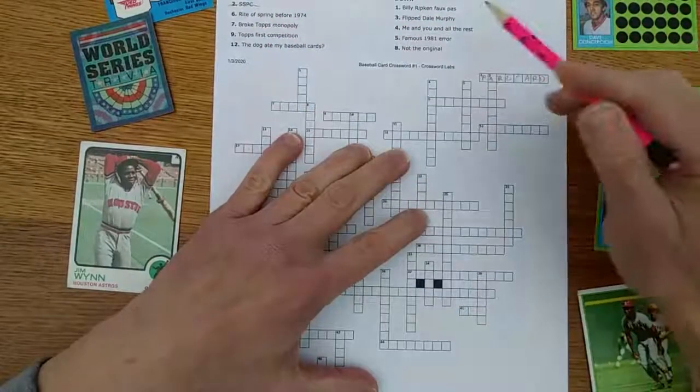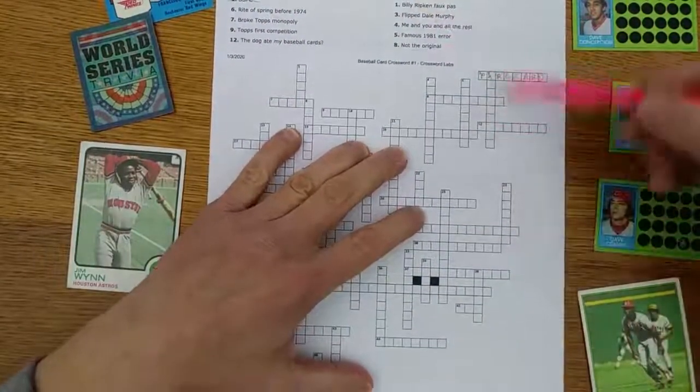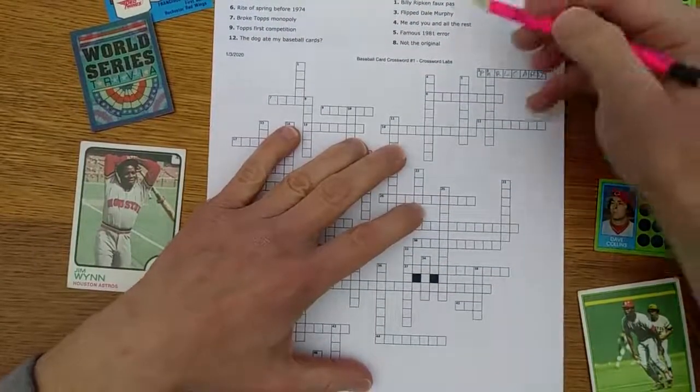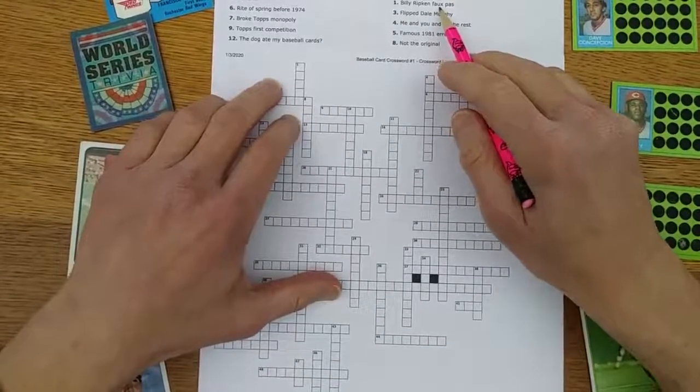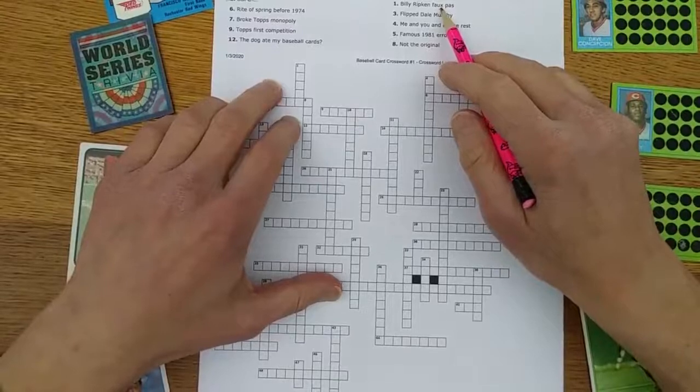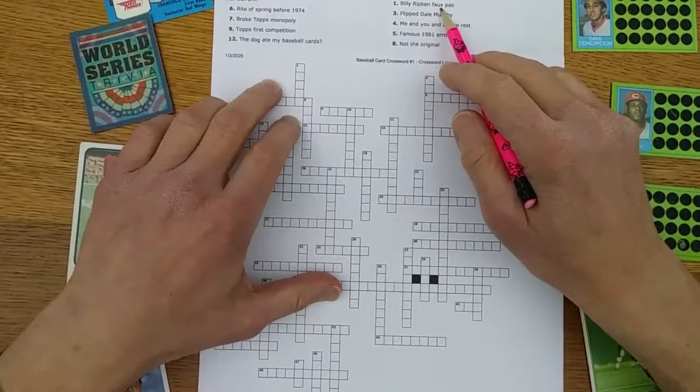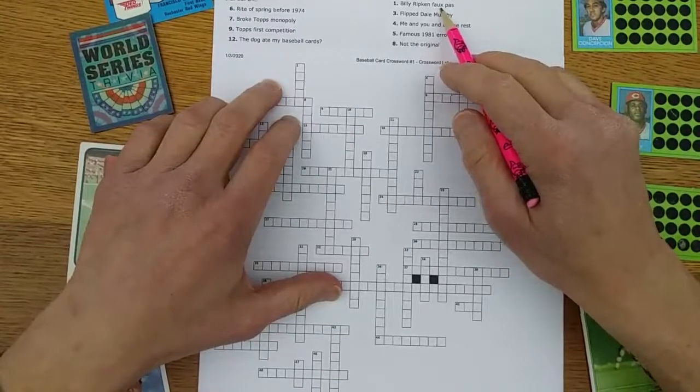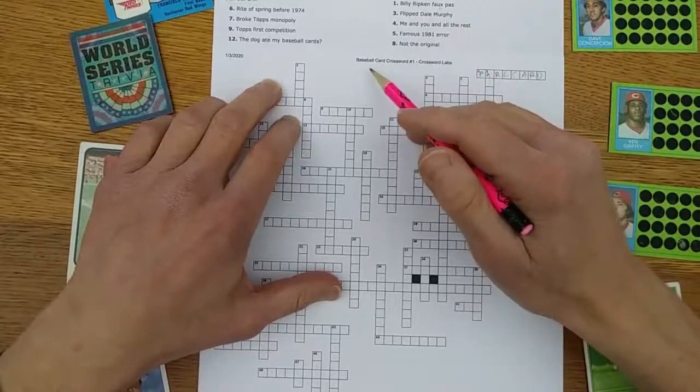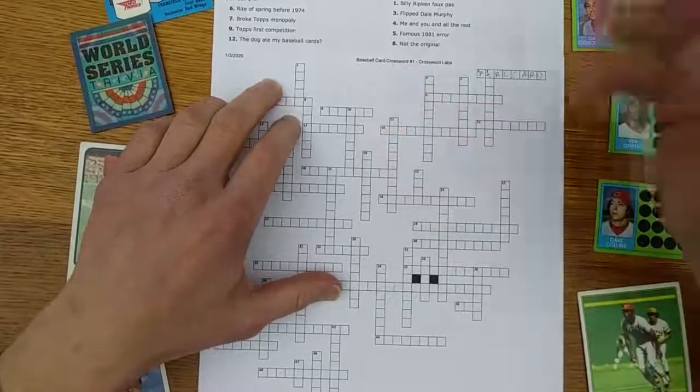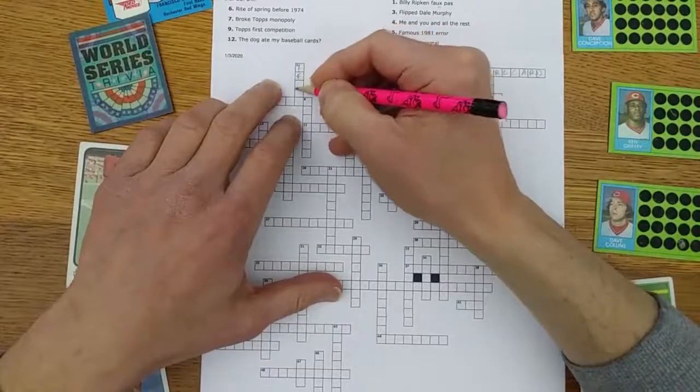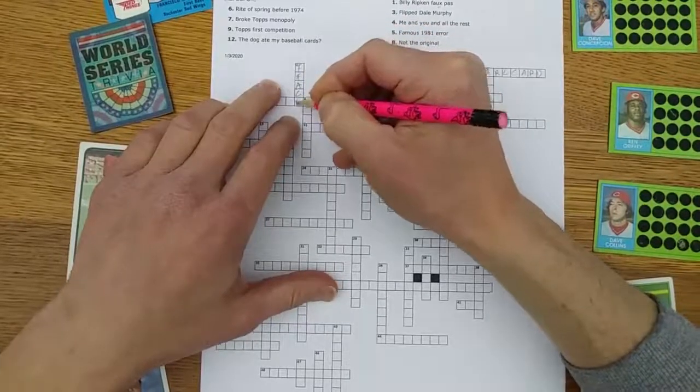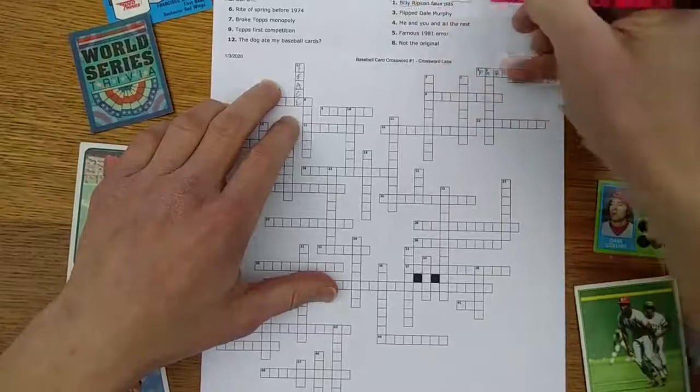We'll just go side to side to conserve some real estate here. Billy Ripken faux pas: In 1989 Fleer, Ripken had profanity on his bat written on the bat knob. It was blank face and became known as F face in politer circles of the hobby. So we'll stick with the polite version.